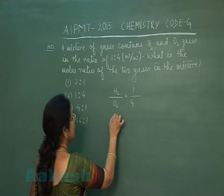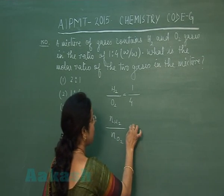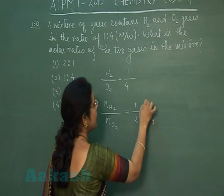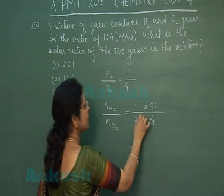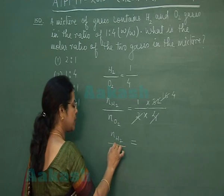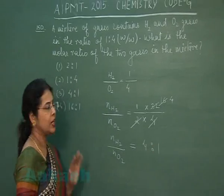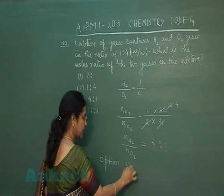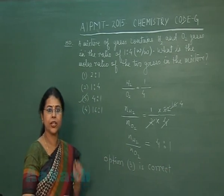The molar ratio is asked, so we convert to number of moles. Number of moles = mass divided by molecular mass. For hydrogen: 1 g ÷ 2 = 0.5 mol. For oxygen: 4 g ÷ 32 = 0.125 mol. So the molar ratio of hydrogen to oxygen is 4:1. Therefore, option 3 is the correct option.